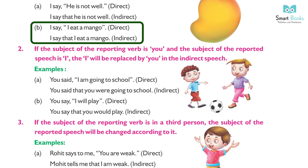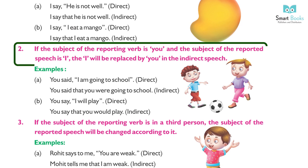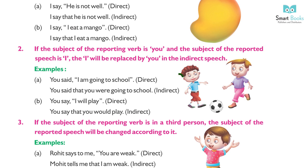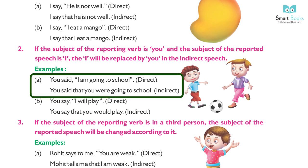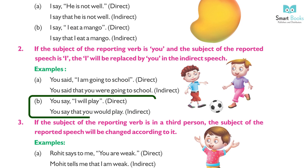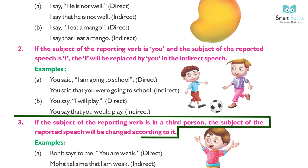(2) If the subject of the reporting verb is 'you' and the subject of the reported speech is 'I', then 'I' is replaced by 'you' in indirect speech. Examples: (a) You said, 'I am going to school.' (Direct) → You said that you were going to school. (Indirect) (b) You say, 'I will play.' (Direct) → You say that you would play. (Indirect)